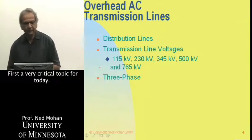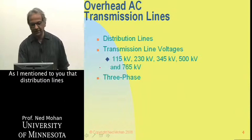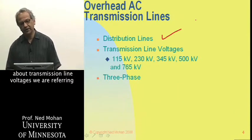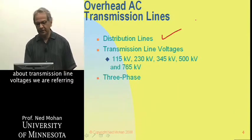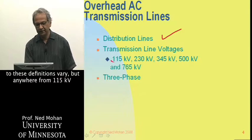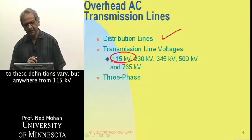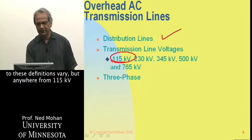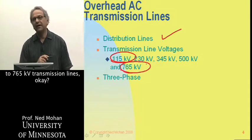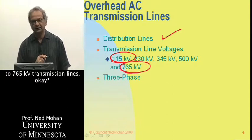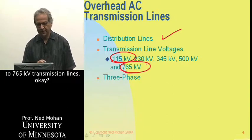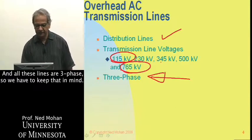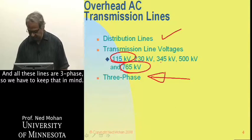There are distribution lines at lower voltages, but when we talk about transmission line voltages — and these definitions vary — we are referring to anywhere from 115 kV to 765 kV transmission lines. All these lines are three-phase, so we have to keep that in mind.